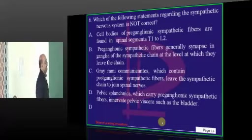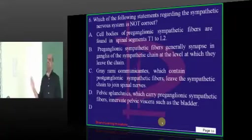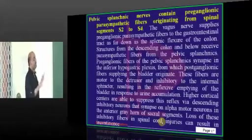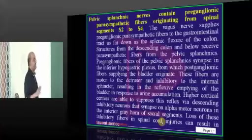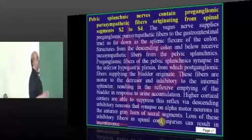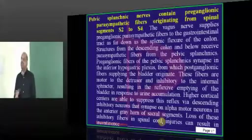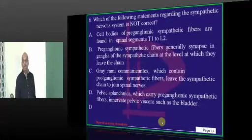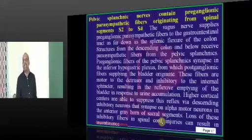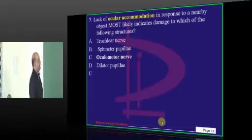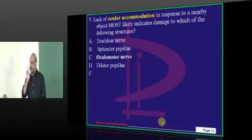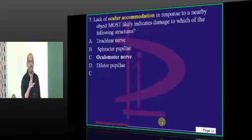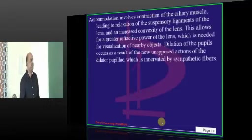No problem. Now, sympathetic nervous system — let us talk about it. Pelvic splanchnic nerves contain the preganglionic parasympathetic fibers originating from S2 to S4 — that is what you have to basically remember. They do not carry sympathetic fibers. Accommodation is carried out by the oculomotor nerve, as all of you know very well.